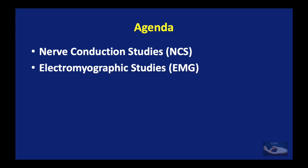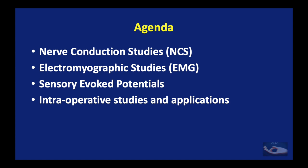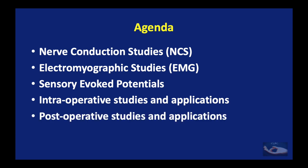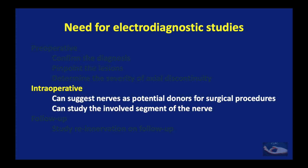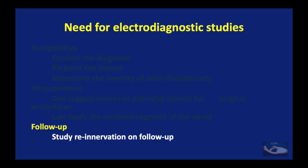These five concepts are: nerve conduction studies; electromyographic studies, which study the activity within the muscle alone; sensory evoked potentials; intraoperative nerve studies and their applications; and postoperative nerve studies and applications — that is, the studies of the nerves after surgical management. The need for electrodiagnostic studies in the preoperative period is to confirm the diagnosis, to localize the lesions, and to determine the severity of axonal discontinuity. Intraoperative studies help suggest nerves as potential donors and to study the involved nerve segment, and also to study re-innervation of muscles on follow-up.